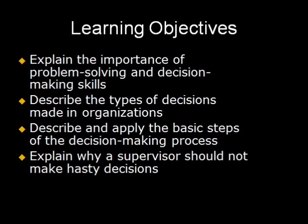There are seven basic steps to the decision-making process. First, you have to define the problem. Then you have to analyze the problem, gathering all the facts and information. Third, you have to establish decision criteria. Fourth, you have to develop alternatives. Fifth, you have to evaluate the alternatives. Next, you have to select the best alternative. And finally, number seven, you have to follow up and appraise the results. Each step is important to developing an appropriate solution to any problem. However, the amount of time spent in each step will vary according to the nature of the problem, the importance of the problem, and the information available.